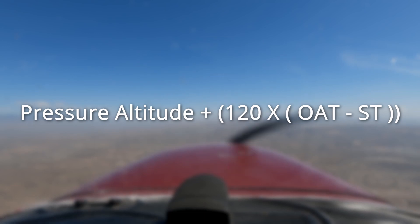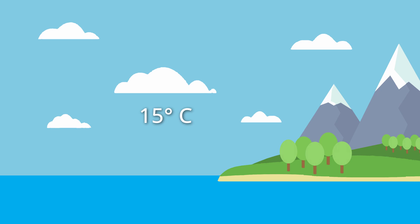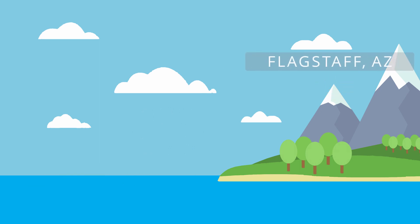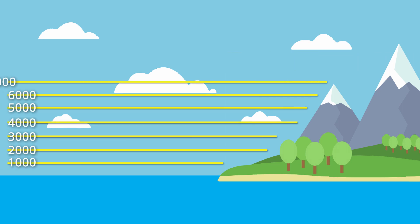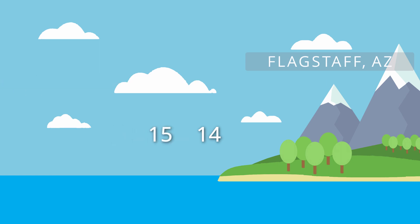Now there are a few catches, like standard temperature. We all know that a standard day is 15 degrees Celsius and an altimeter setting should be 29.92, but that's at sea level. The standard day temperature in Flagstaff, Arizona is actually closer to 1 degree Celsius. For every 1,000 feet above sea level, the standard temperature changes by 2 degrees Celsius. Flagstaff's at 7,000 feet, so 7 times 2 is 14. Take the standard sea level temperature and subtract 14, and we get Flagstaff's standard temperature: 1 degree Celsius.